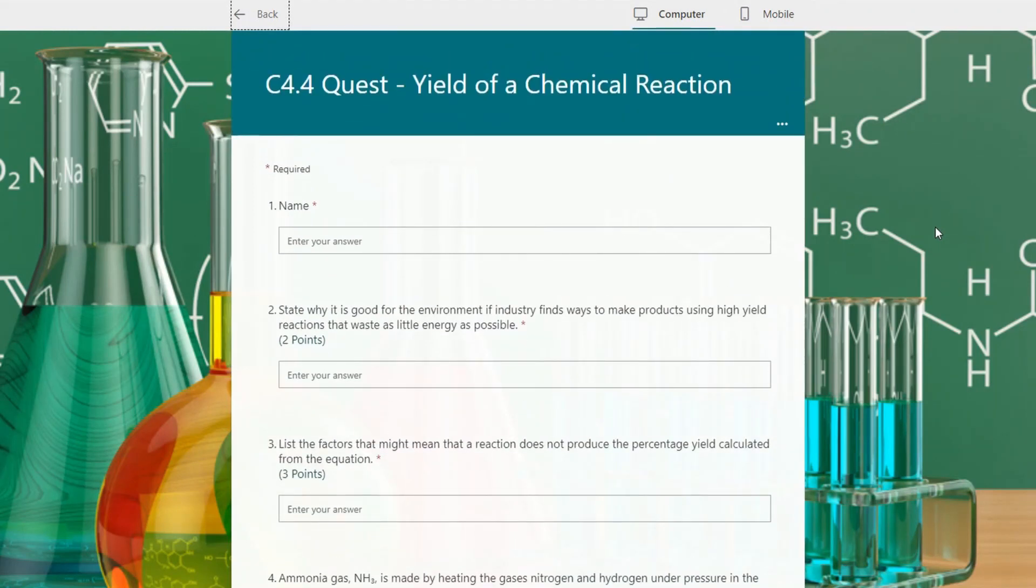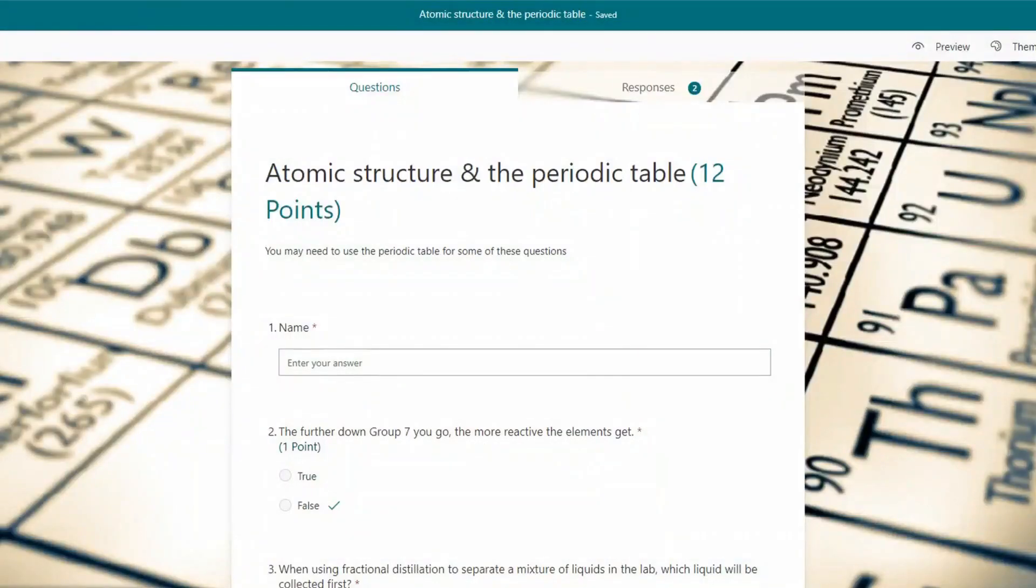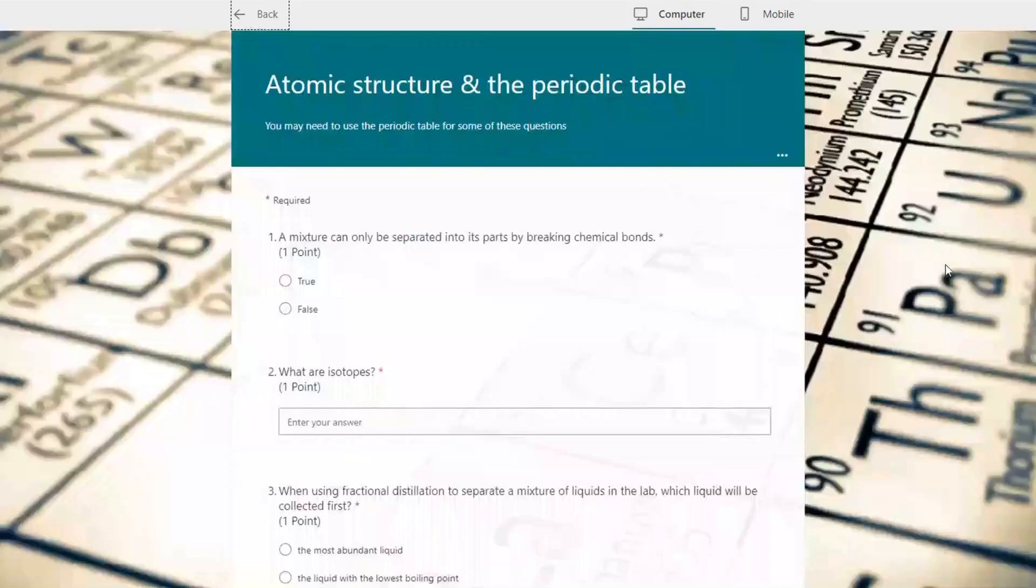It also makes the forms look a little bit more professional as well. So this is obviously a chemistry one on the yield of chemical reaction. Here's one I prepared earlier. This one is on the periodic table, an atomic structure. And as you can see there we have a periodic table in the background.